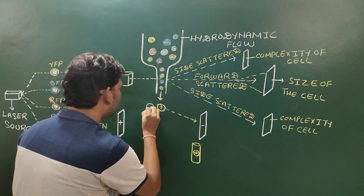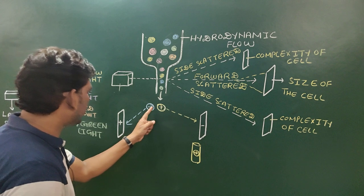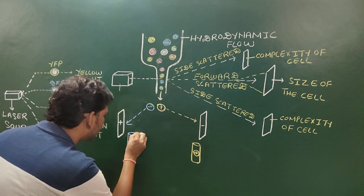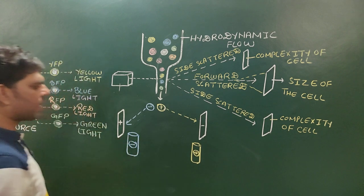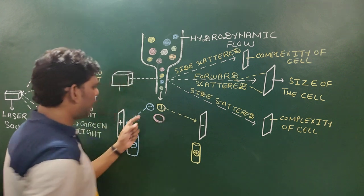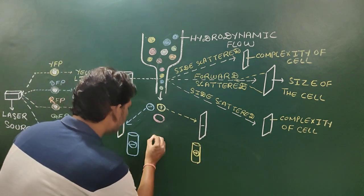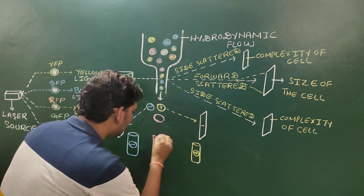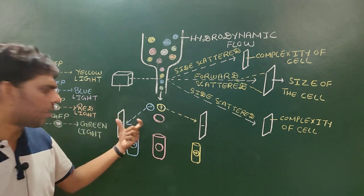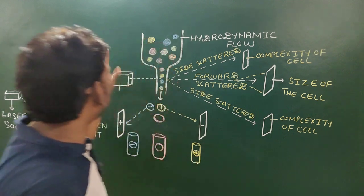If a protein has a negative charge, due to its negative charge it is attracted towards the positive electrode and is collected into a different test tube. If a protein has a net charge of zero — meaning it is neutral — it is not able to move towards either the negative or positive electrode, and this neutral protein is collected in its own test tube. This is how the separation of different kinds of cells or proteins is done using FACS.